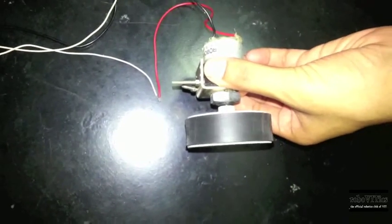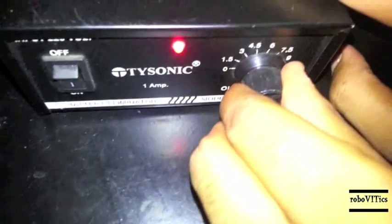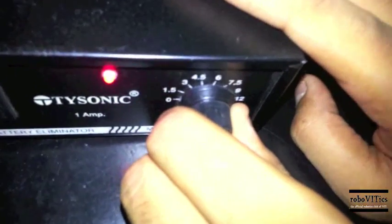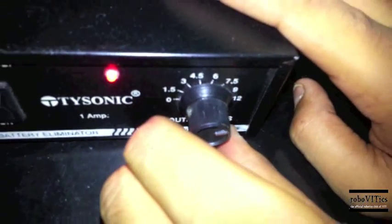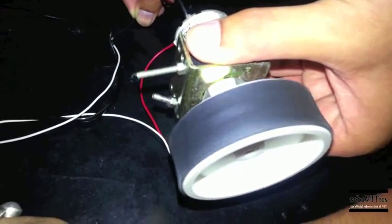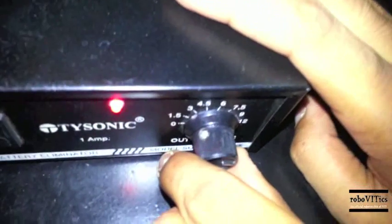Now I will be changing the voltage supply and you can see that at different voltage the wheel will be rotating at different RPM. Now currently it is at 7.5 volts. Now I will be making it to 8 volts. You can see the speed further increases. Now you can see that the voltage supply is directly proportional to the speed of rotation of the motor.